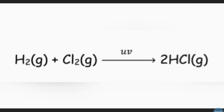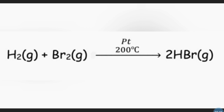Chlorine and hydrogen explode if exposed to sunlight or a flame to give hydrogen chloride gas. Bromine vapour and hydrogen combine with a mild explosion if put in a flame, forming hydrogen bromide gas.